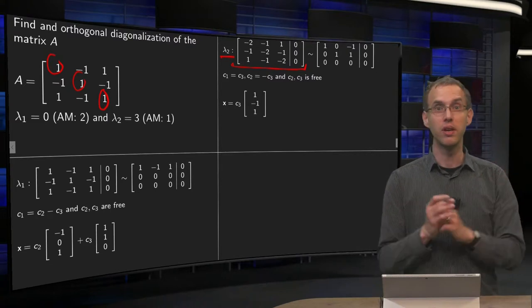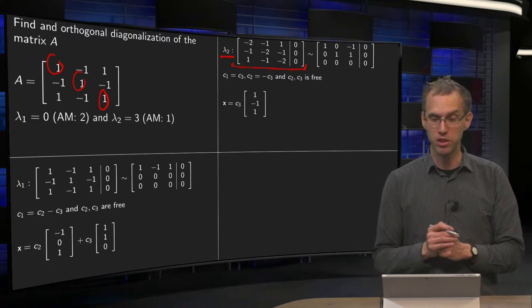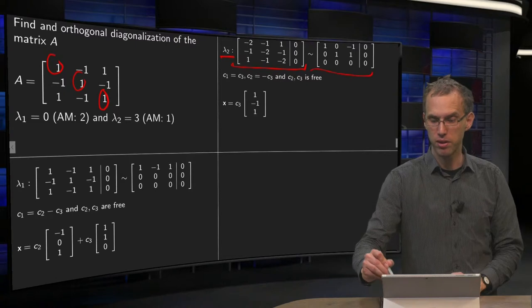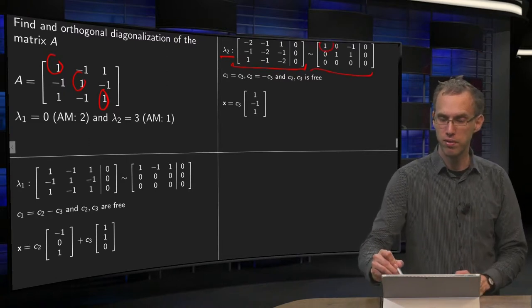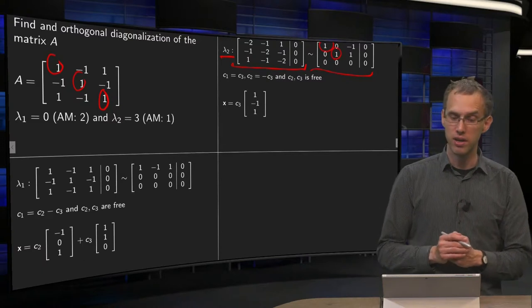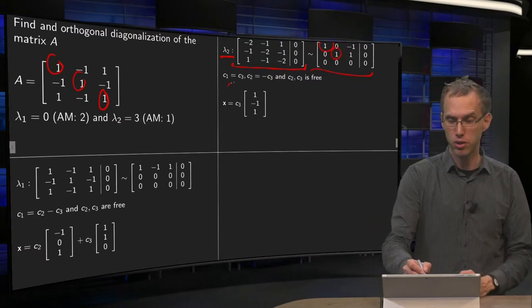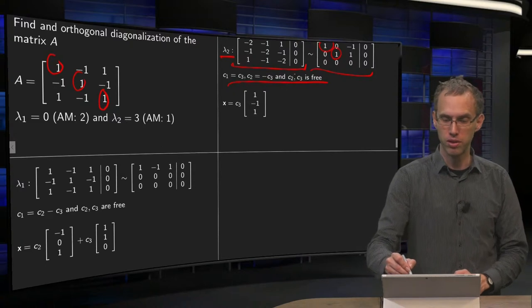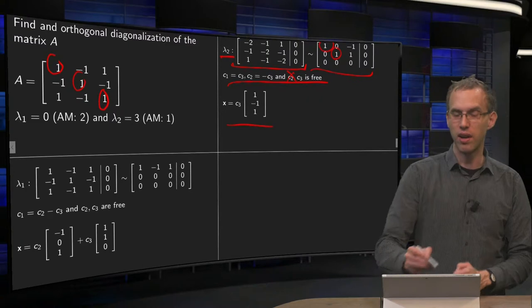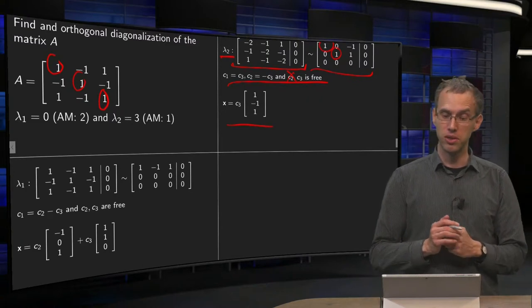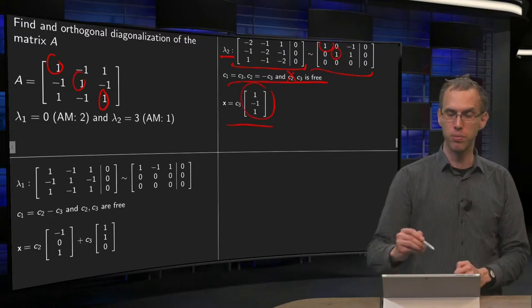We do some row reduction, you can do that yourself. I skip the row reduction steps. And here we have the reduced echelon form, we have one free variable, two pivots over here and over here, we can take c3 free, and here is our solution. Only c3 free of course. And then here we have our solution x with the eigenvector 1, minus 1, 1.